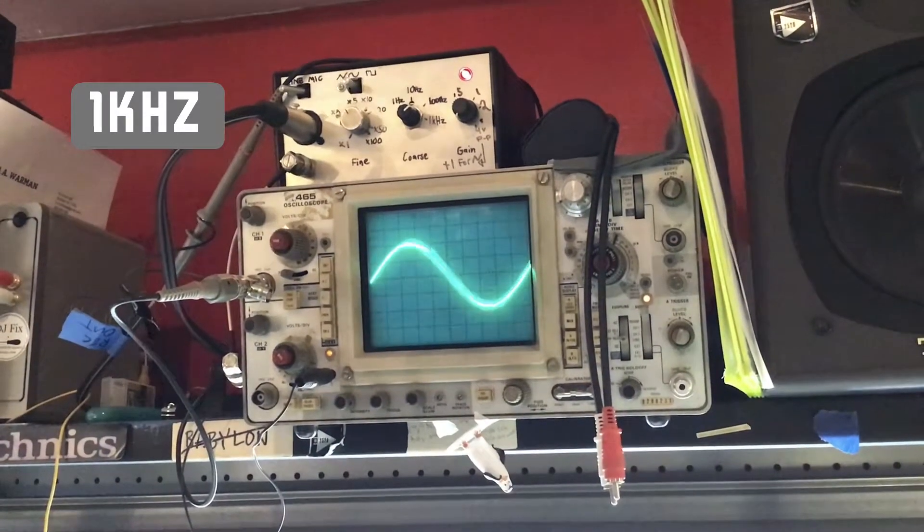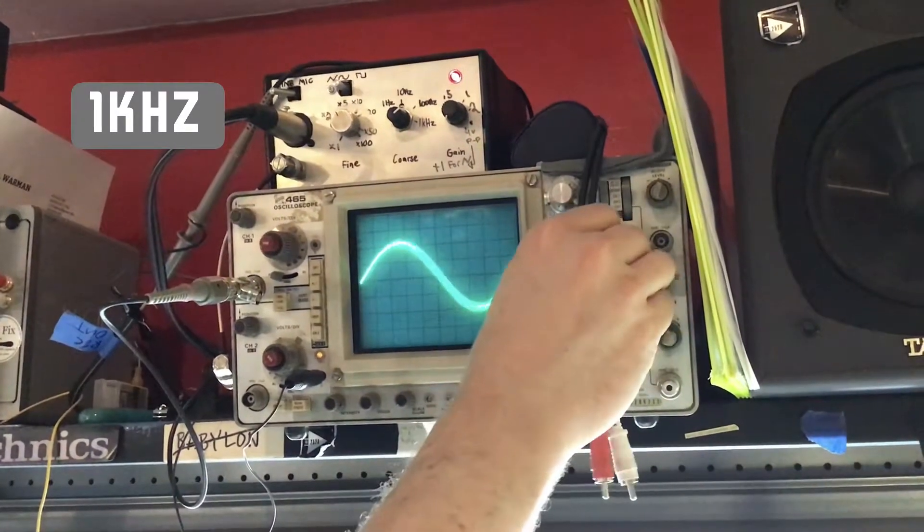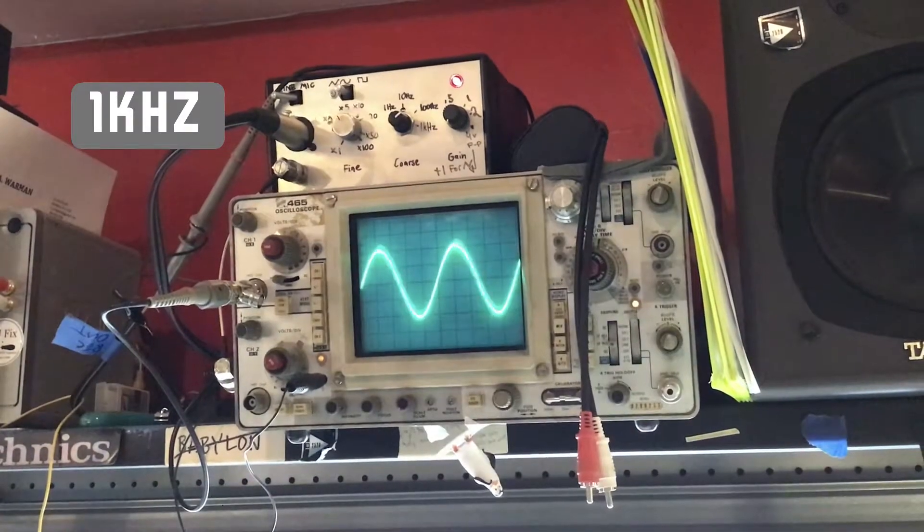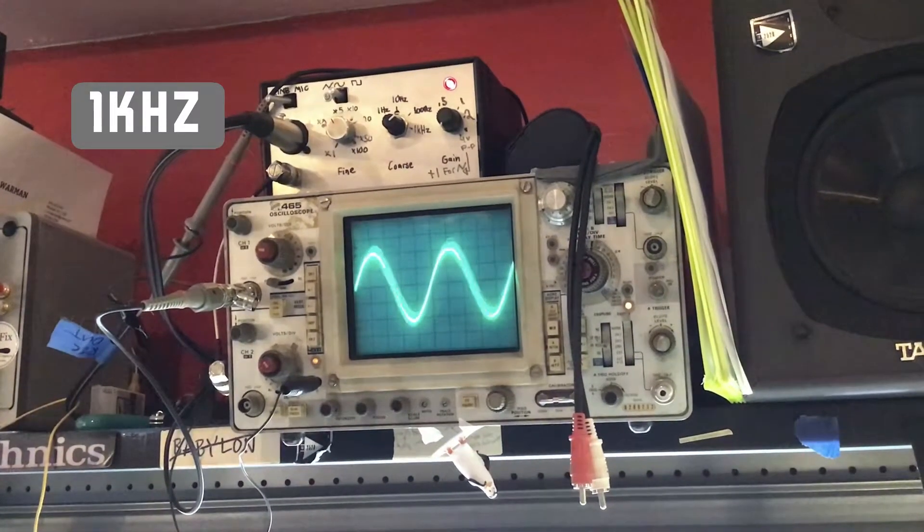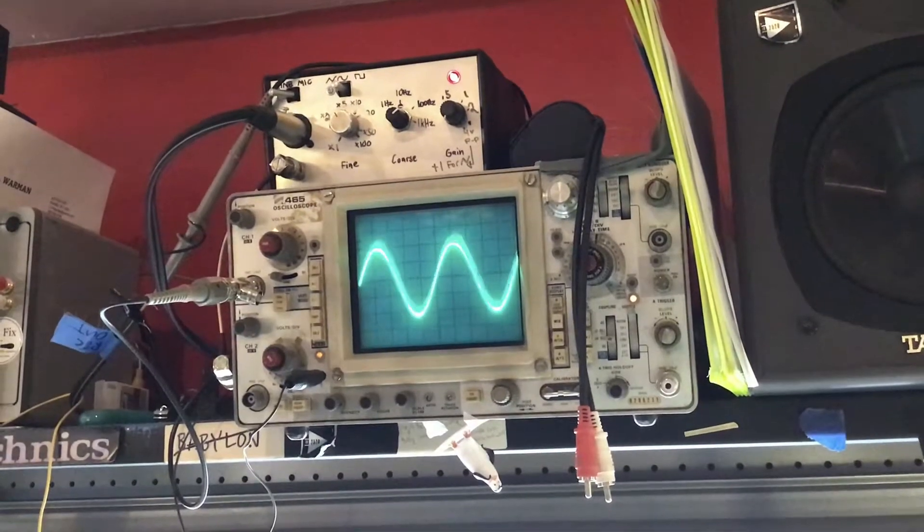1k. Kind of the seat of the mids there. Very important for the vocal range if you have singing in your music. Looks great.